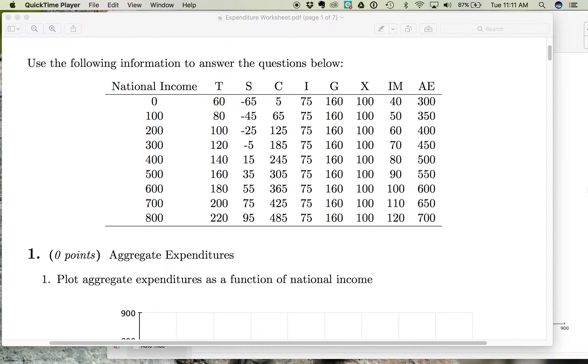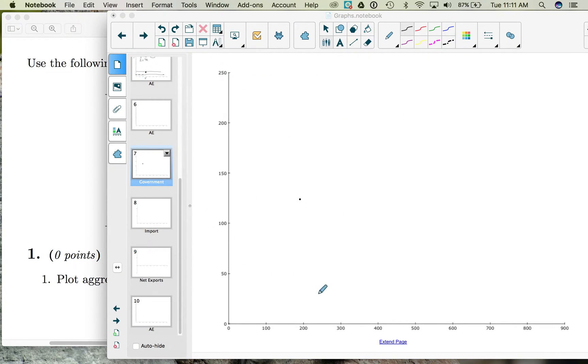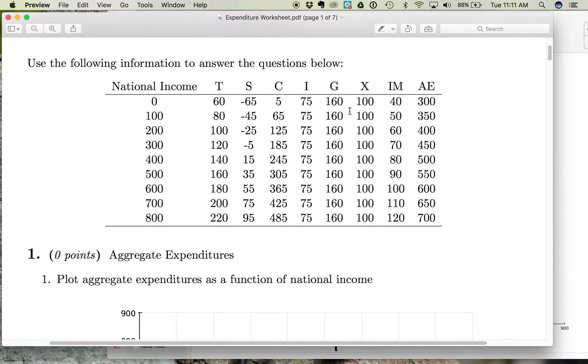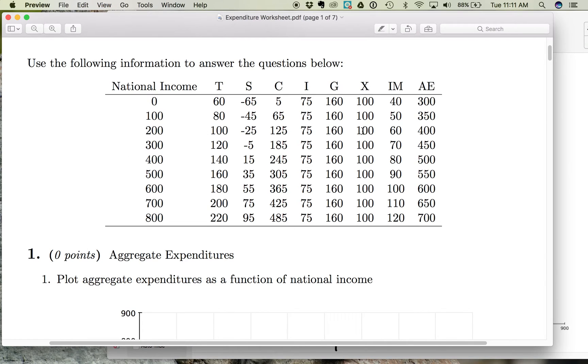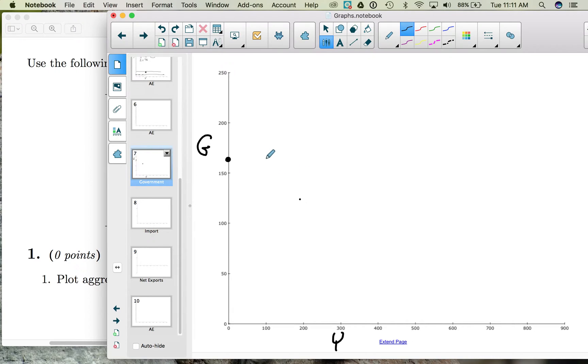So if we're to plot government spending, here we have national income on the horizontal and government spending on the vertical. When national income is zero, government spending is 160. When national income is 100, government spending is 160.